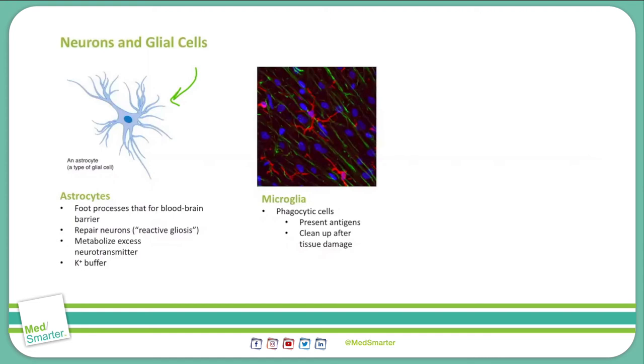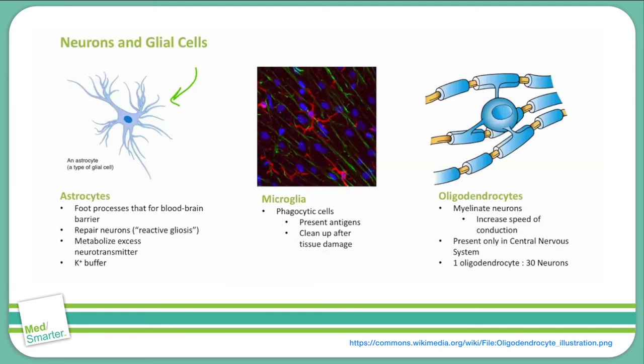Just like astrocytes, they have this branching appearance. Moving on, we have oligodendrocytes. The purpose of oligodendrocytes is to myelinate neurons. It is important to note that oligodendrocytes myelinate neurons only in the central nervous system. The peripheral nervous system has its own type of myelinating cell, called the Schwann cell, which we'll discuss shortly.